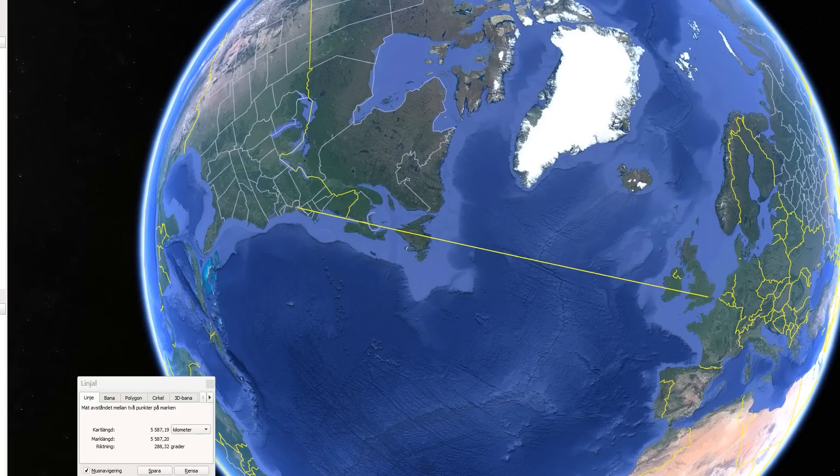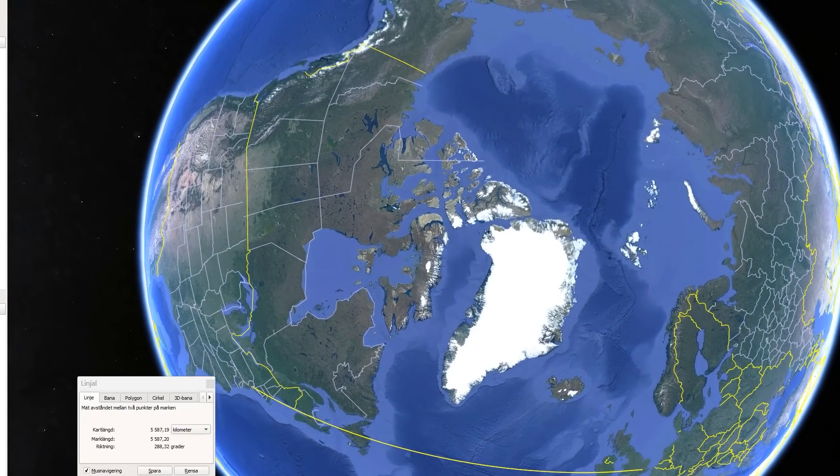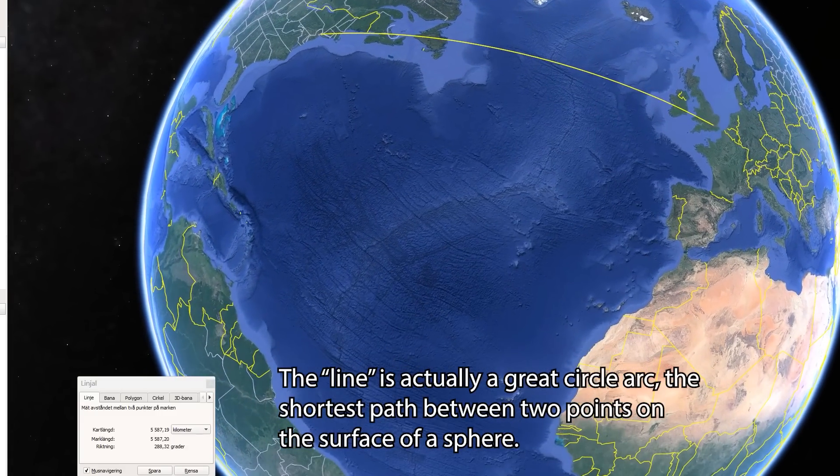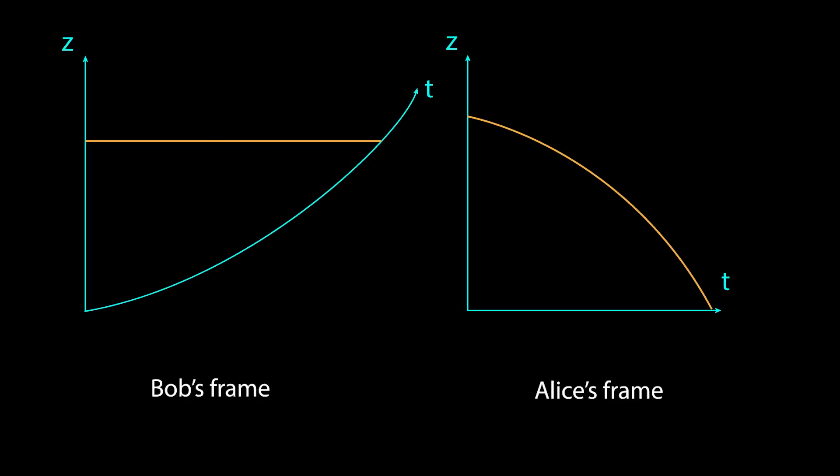This is analogous to how what appears to be a straight line to a person walking on the Earth's surface is actually a curved path when seen on a globe instead. This is because the Earth's surface is curved. It's non-Euclidean. The general term for the equivalent of a straight line in any shape of a space is geodesic. The ball follows a geodesic in Bob's frame. In Alice's frame, that geodesic no longer appears as a straight line because she's outside the curved region. She's looking at the globe. She's not walking on the ground.